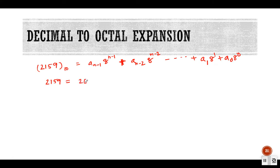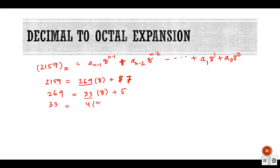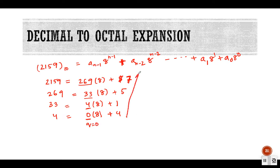Let's find the octal expansion of 2159. 2159 = 269 * 8 + 7. Then 269 = 33 * 8 + 5. Then 33 = 4 * 8 + 1. Then 4 = 0 * 8 + 4. We stop because the quotient is now zero. The octal expansion is all remainders printed in reverse order: 4157, meaning (2159)₁₀ = (4157)₈.